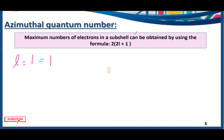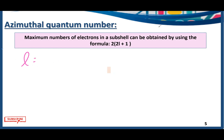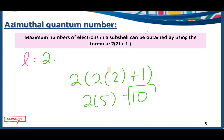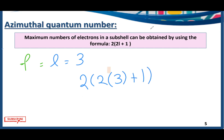For p, l equals 1: 2 × (2×1 + 1) = 2 × 3 = 6. So we can accommodate six electrons in the p subshell. For d, l equals 2: 2 × (2×2 + 1) = 2 × 5 = 10. So we can accommodate 10 electrons in the d subshell. For f, l equals 3: 2 × (2×3 + 1) = 2 × 7 = 14. So we can accommodate 14 electrons in the f subshell.